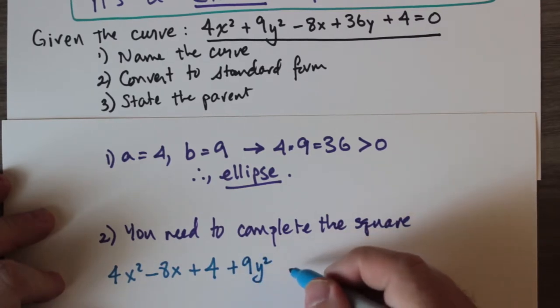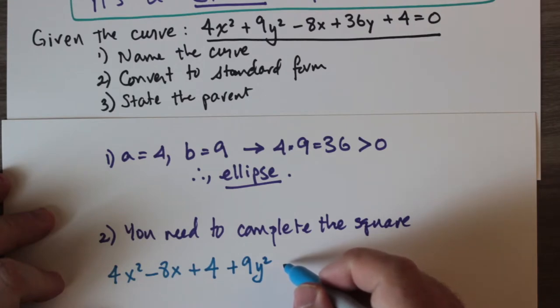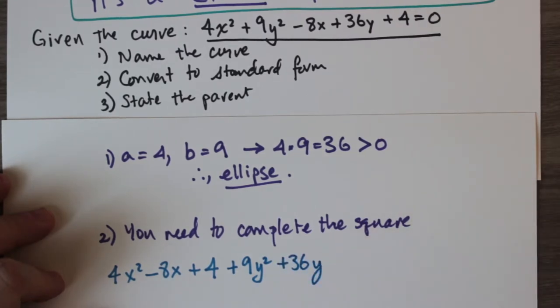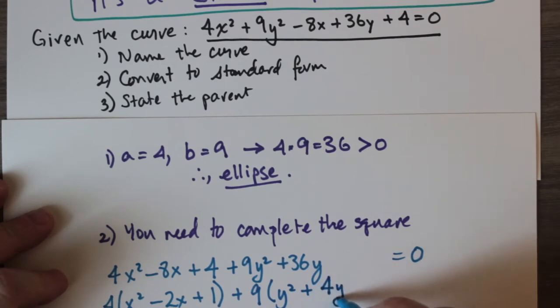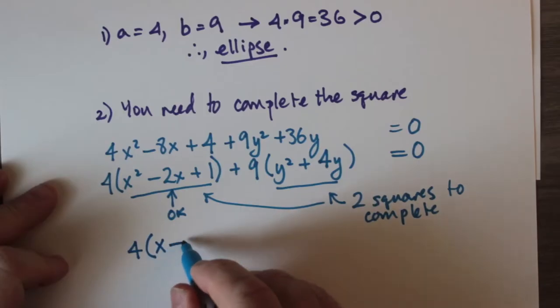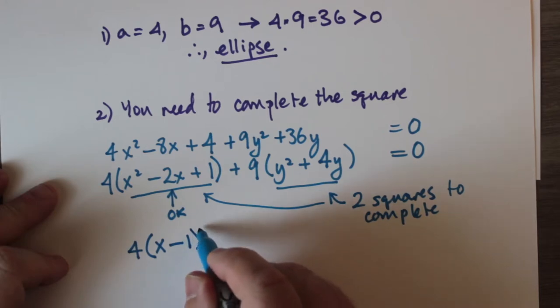So I have here 4x² - 8x + 4 and we can consider that to be a perfect square trinomial. In fact just for completeness we'll factor out the 4. As for the 9y² + 36 you can factor out the 9 because 9 goes into 36 and 9 and you end up with y² + 4y. We've already completed the first square in terms of x: x² - 2x + 1 is just (x - 1)² - you can check that by expansion.